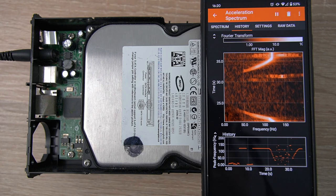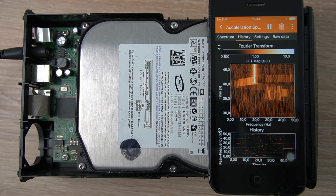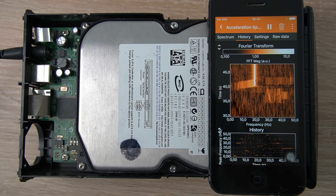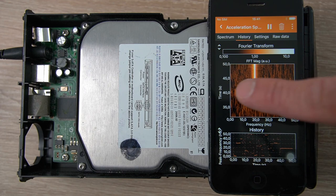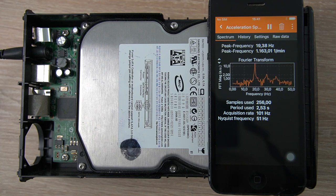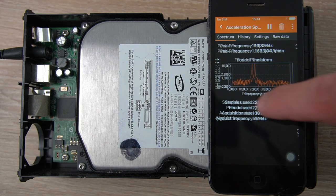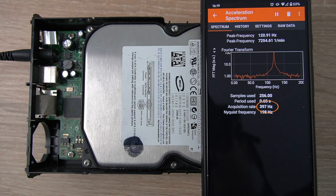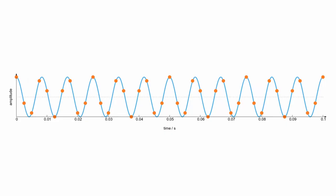Now, here comes a strange thing. If we place a different phone on the disk, we get a very different result of 20 Hertz. Why is that? This is the so-called alias effect, and it depends on the sample rate of the sensor. My Pixel 3 here has a sample rate of 400 Hertz. For the vibration signal of the hard disk spinning at 120 Hertz, it means that there are a bit more than three data points per rotation to resolve the vibration.